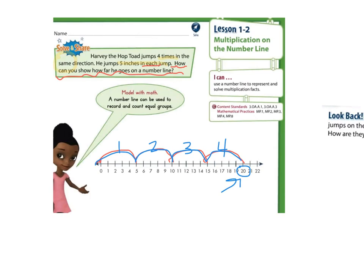Think of each jump as an arrow. Each arrow or jump is five inches. So we are showing you, we have four jumps of five inches, which equals 20 inches. Harvey jumped 20 inches.